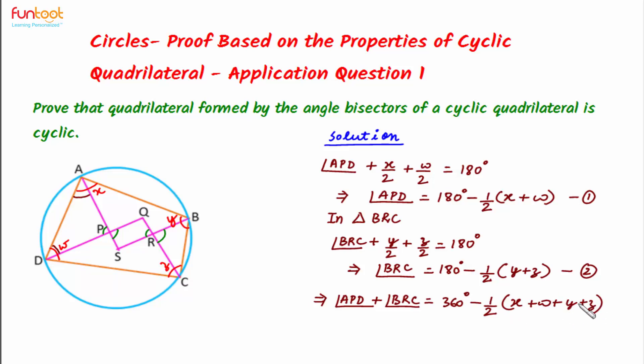So this will imply here that angle APD plus angle BRC is equal to 360 minus 1 by 2 multiplied by 360 degrees.